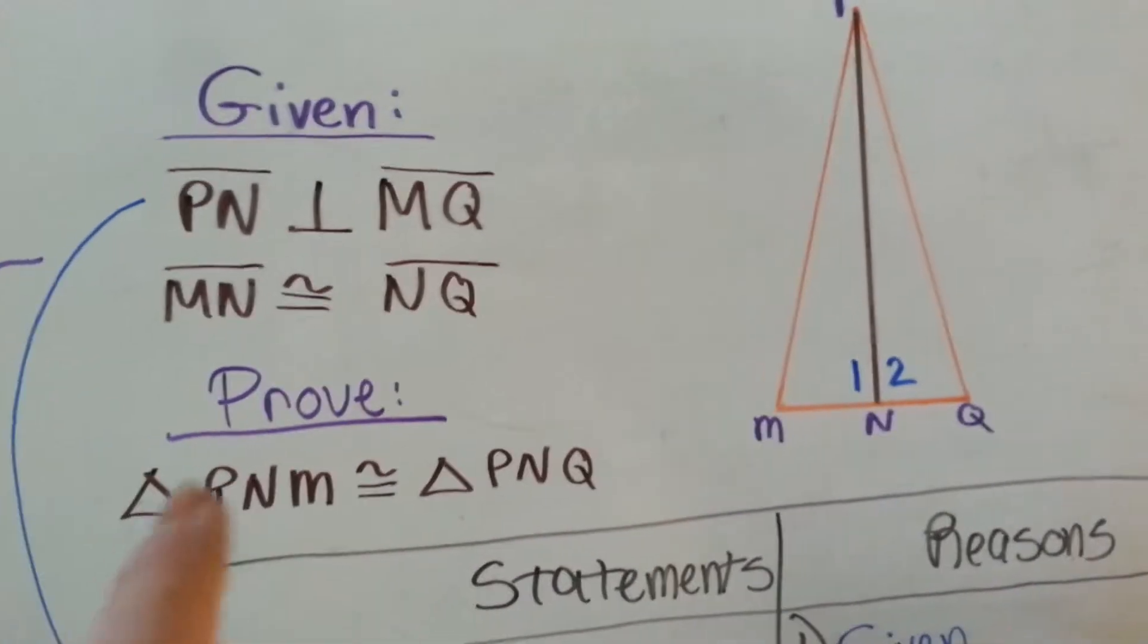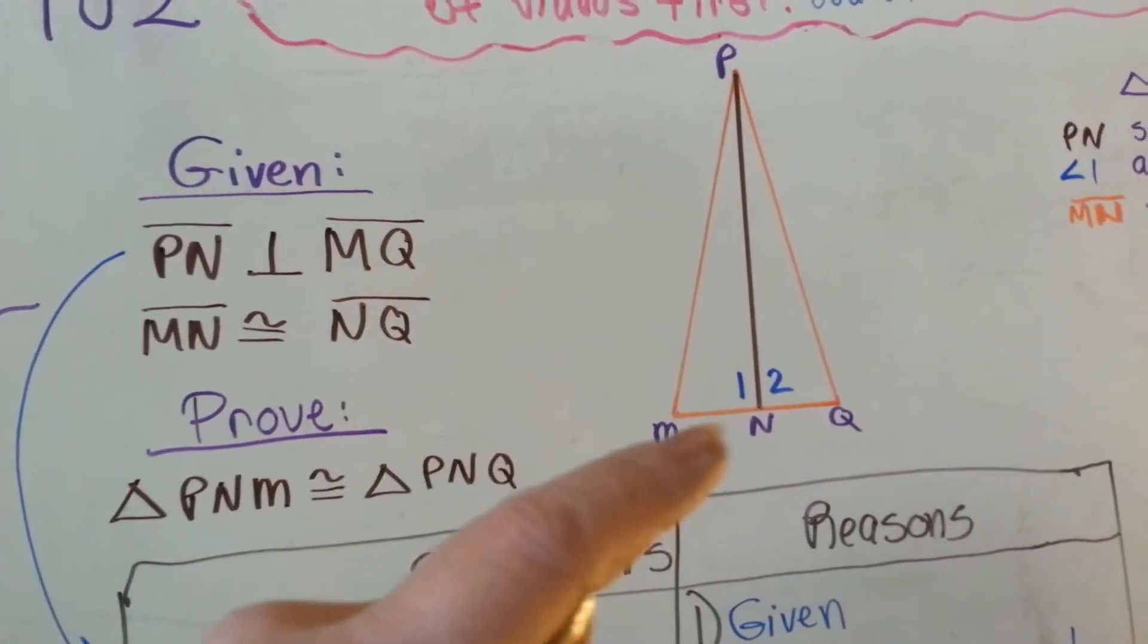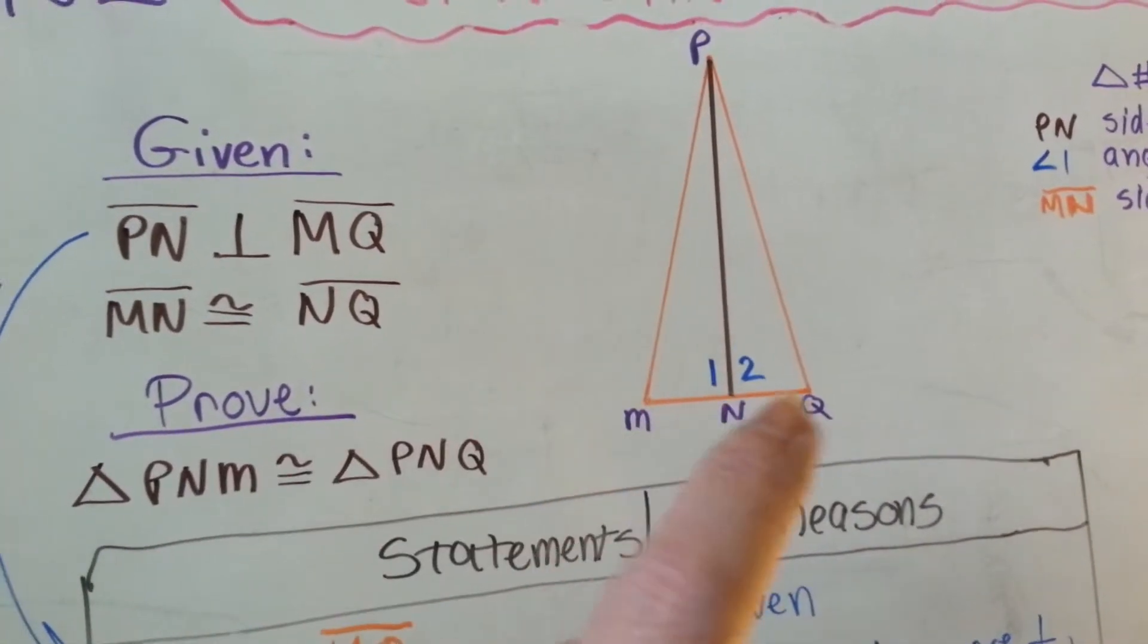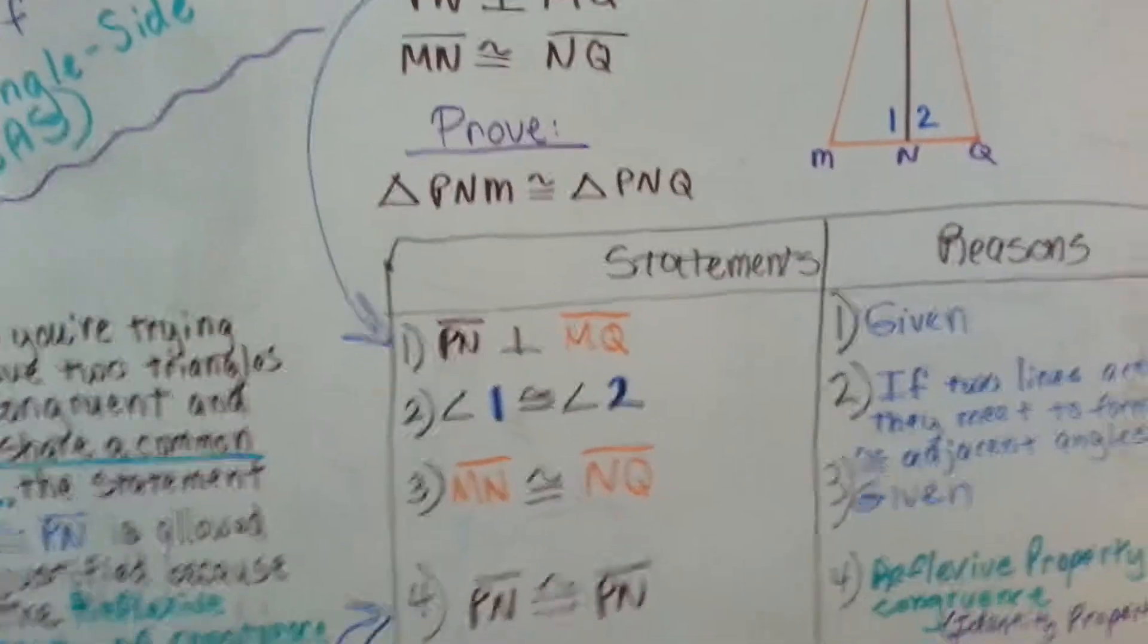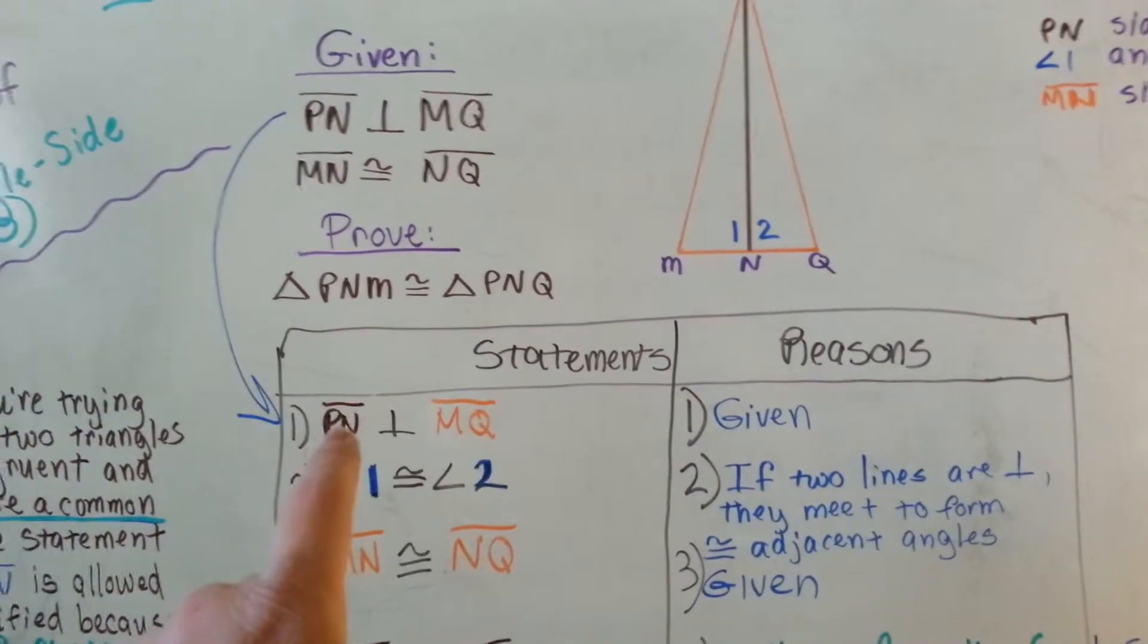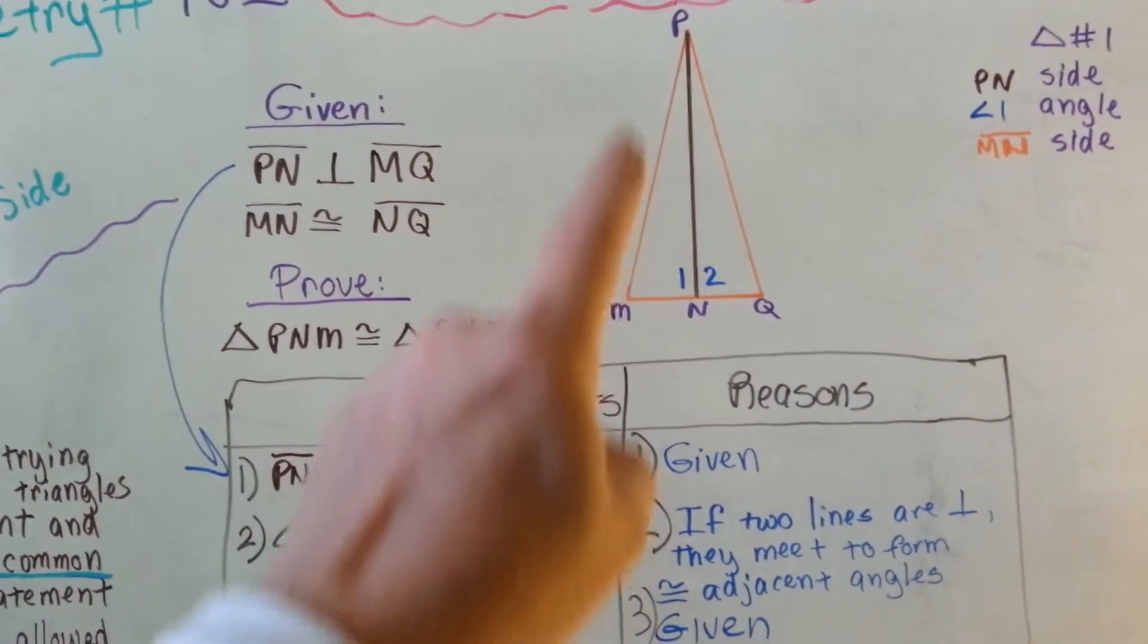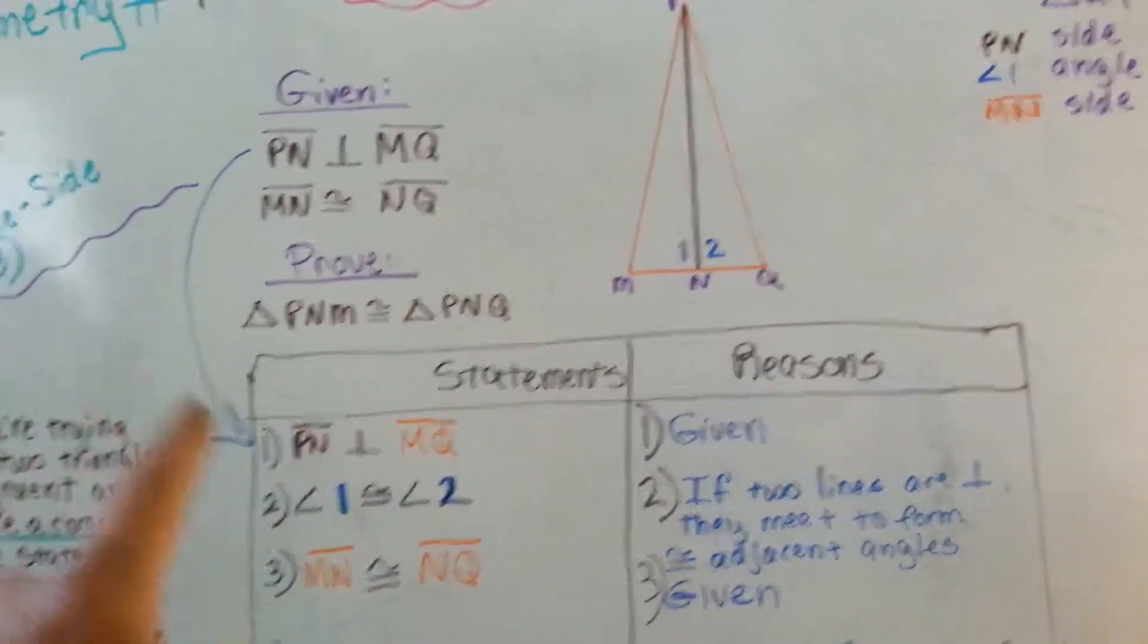They want us to prove that triangle PNM is congruent to PNQ. So the first thing we're going to do is plug in the given that PN is perpendicular to MQ, and we put that it's given information.